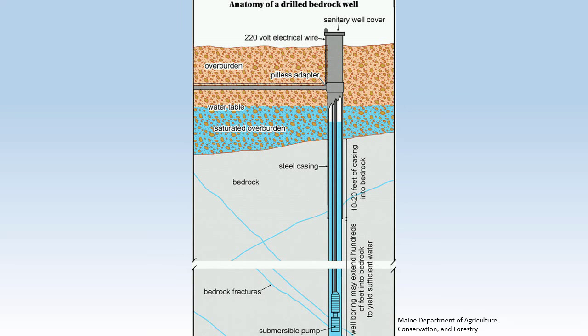This is a diagram of a drilled bedrock well. For a well finished in bedrock, the casing typically extends from just above the land surface to a short distance into the bedrock, where the casing is seated into the rock to keep it in place. The borehole continues down into the bedrock aquifer for some distance below the casing, usually until sufficient water is available to the well.